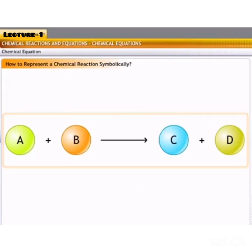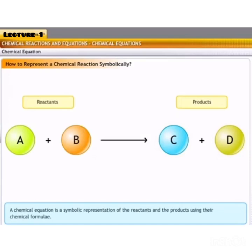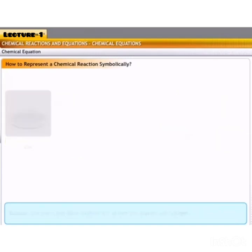So, we can write the chemical reaction in the form of a chemical equation, as shown in the picture, in which we write the reactants on the left hand side and products on the right hand side. So, a chemical equation is a symbolic representation of the reactants and products using their chemical formulae.